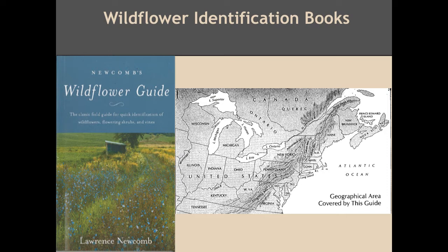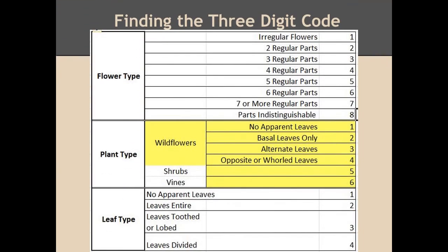The first step to using the Newcomb's Wildflower Guide is to come up with a three-digit code. In the front of the book, you will find a chart. The three-digit code is represented by one number from each of the categories: flower type — remember the difference between regular and irregular flowers and counting the number of flower parts — the plant type, focusing on wildflowers and leaf arrangement, and lastly the leaf type, which focuses on the leaf margin.